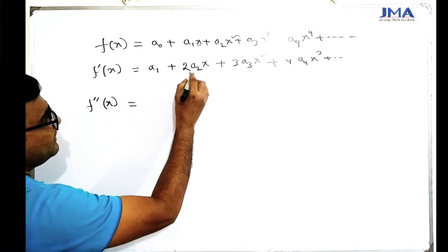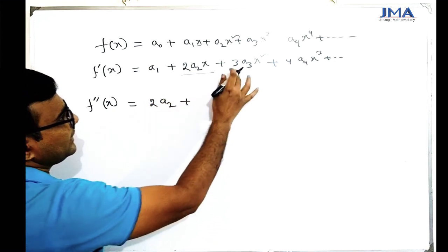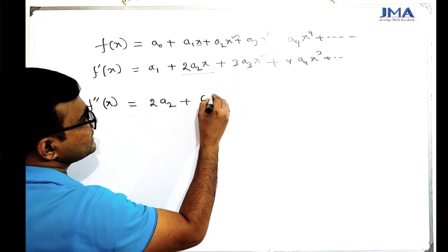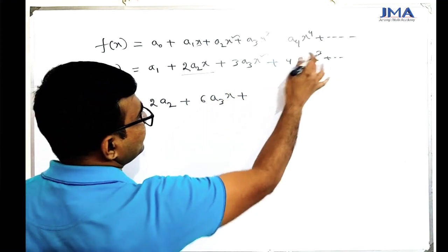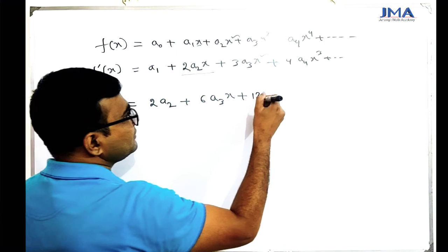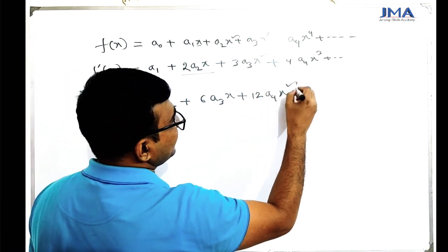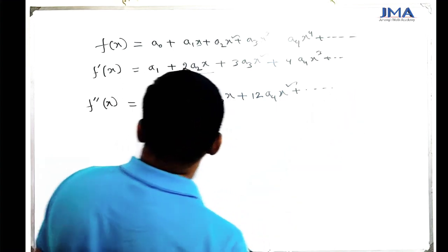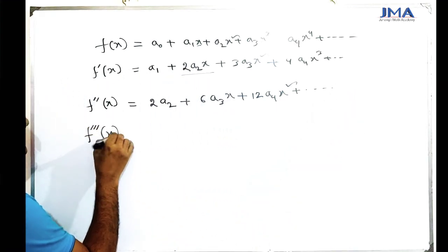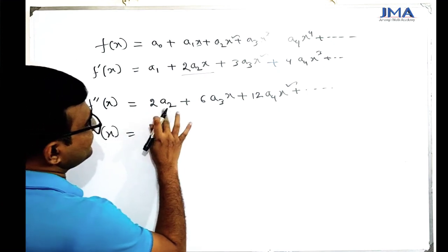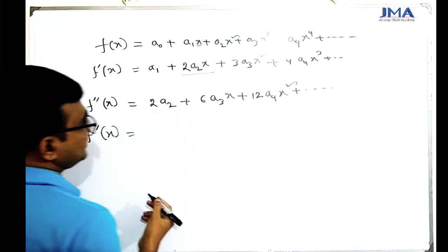We get: 2·a2 plus 6·a3·x plus a4·x squared, and so on. We have to make this a constant, and we have to produce a result from these coefficients.